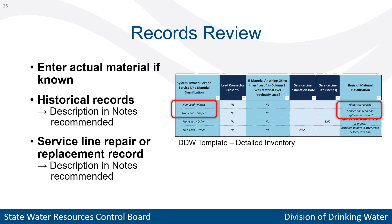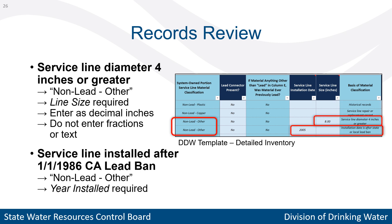Once you have some information, enter the actual service line materials in the detailed inventory if you have records of it. Service lines identified using records do not need to be field verified or inspected. If you use historical records or service line repair and replacement records as the basis, we recommend adding a brief description of that record in the Notes column. If the service line diameter is 4 inches or greater, or if the line was installed after the 1986 lead ban, you can identify it as non-lead other.